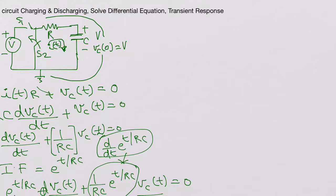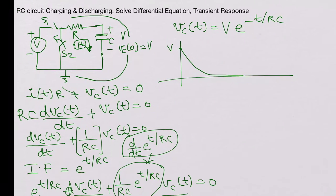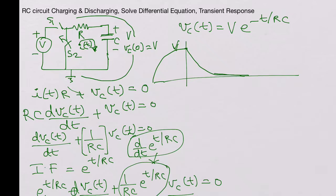So Vc(t) = V · e^(−t/RC). If you plot this with respect to time, it initially starts at voltage V and then discharges exponentially. While charging it went up to V, and now during discharging it falls from V back to ground over a few time constants.